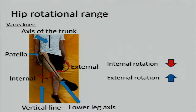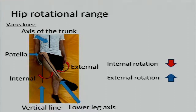In medial knee OA, the lower leg tends to be positioned inside the vertical line. Therefore, there is a need to internally rotate the hip to align with the vertical line prior to measurement. As a result, in medial knee OA patients, it is assumed that the range of hip internal rotation is decreased and that of external rotation is increased when the measurement is performed from the vertical line.